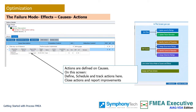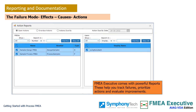Multiple improvement actions can be defined to mitigate each cause and reduce the risk of failure. Define actions, assign them to persons and teams, schedule them, and track them for effective reduction of incidence of occurrence and easier detection of causes. The handbook recommends that the effectiveness of actions needs to be evaluated, validated, and documented before logging closure of an action. FMEA executive comes with several filtered reports that help you in tracking, prioritizing, and managing effectively by exception. Use these reports to take your FMEA efforts beyond mere documentation. The FMEA can also be expressed in a familiar spreadsheet form with a click of a button.